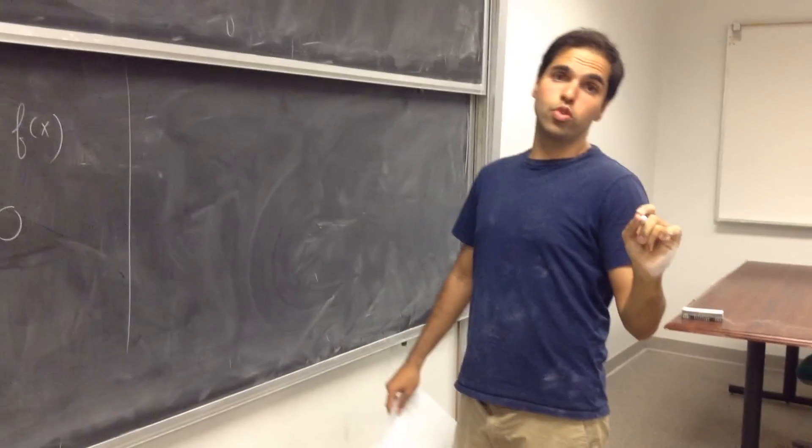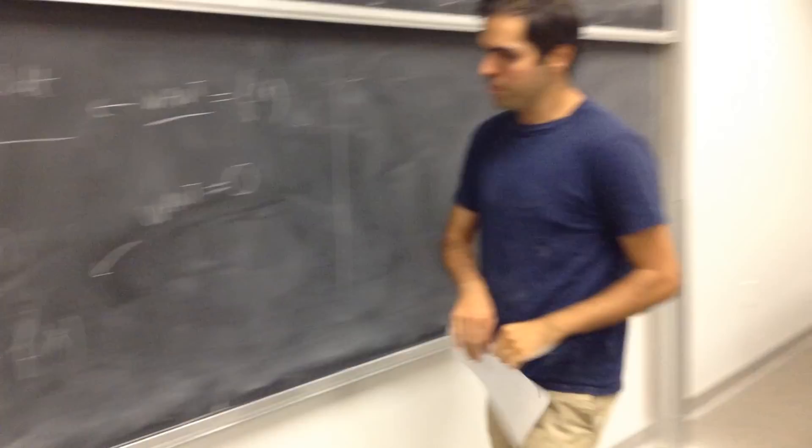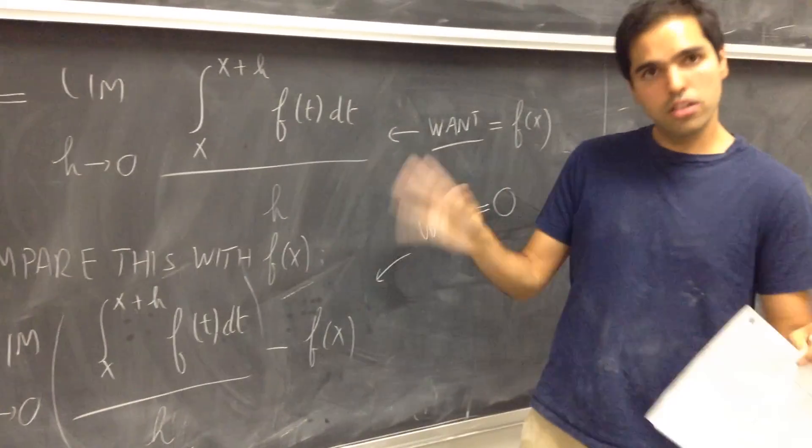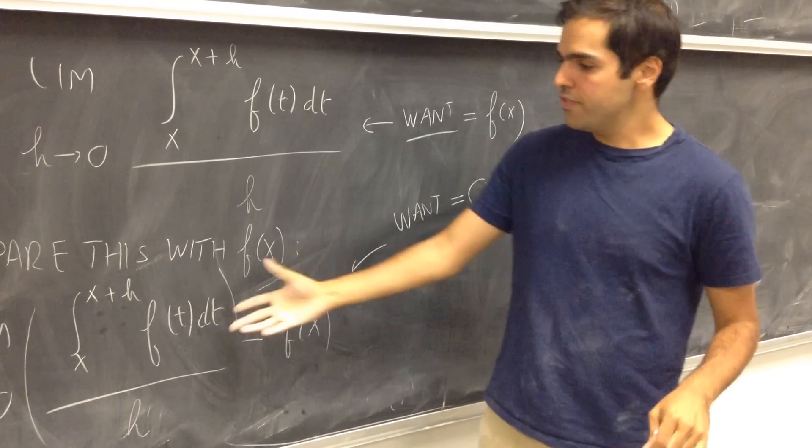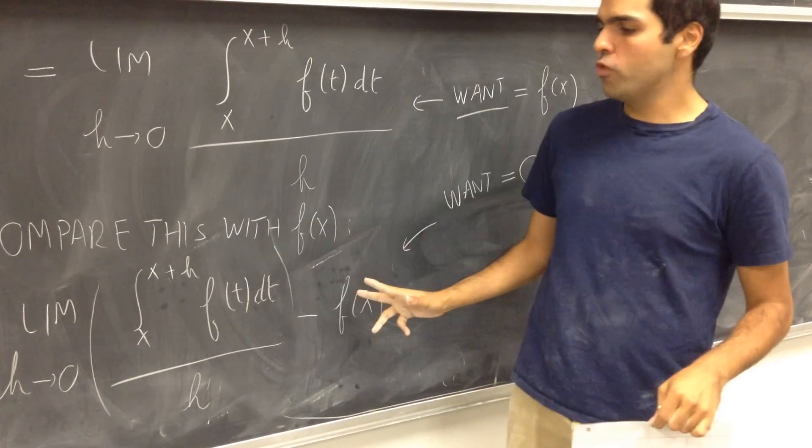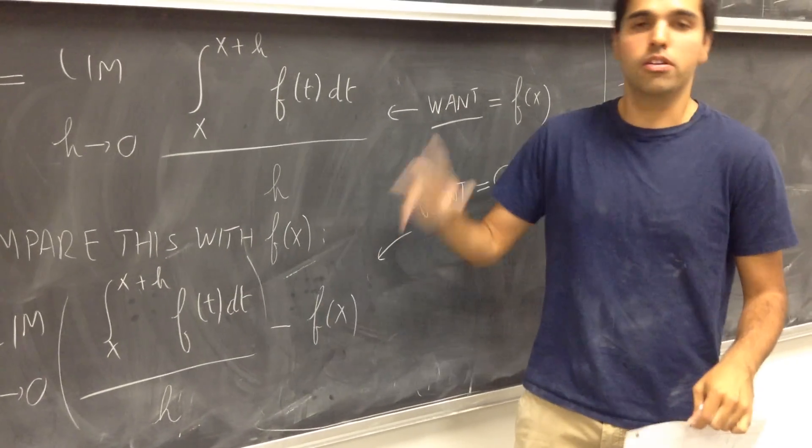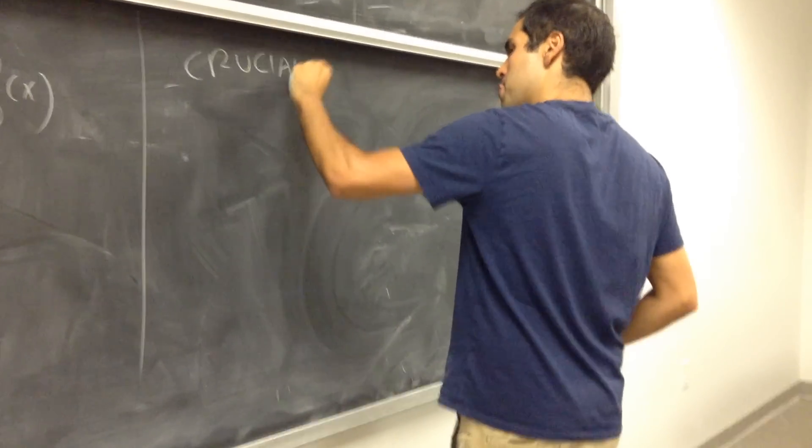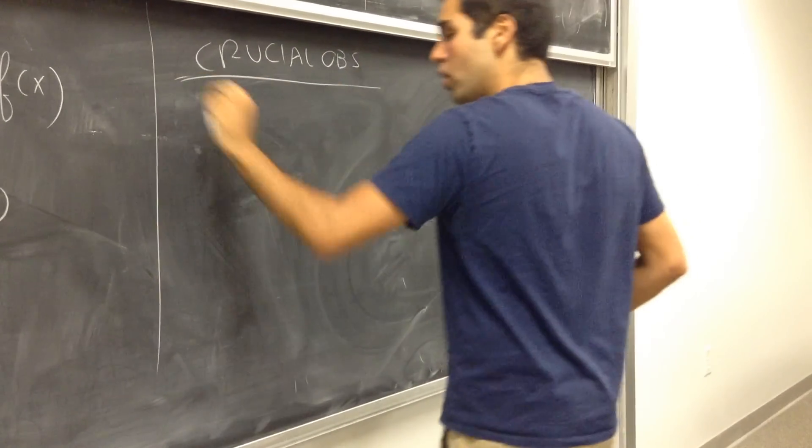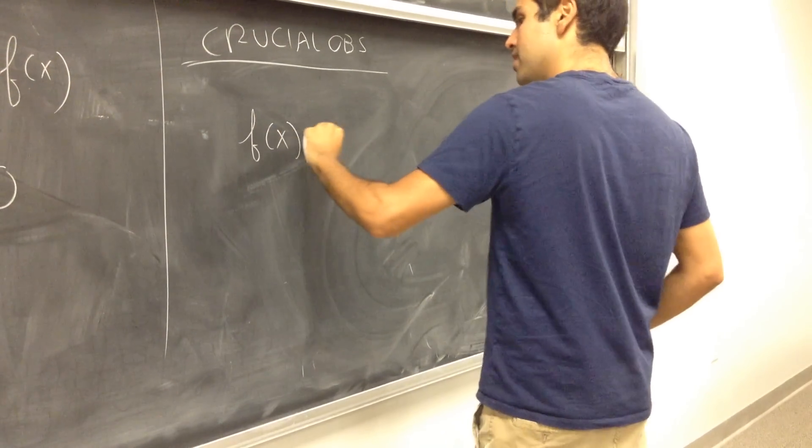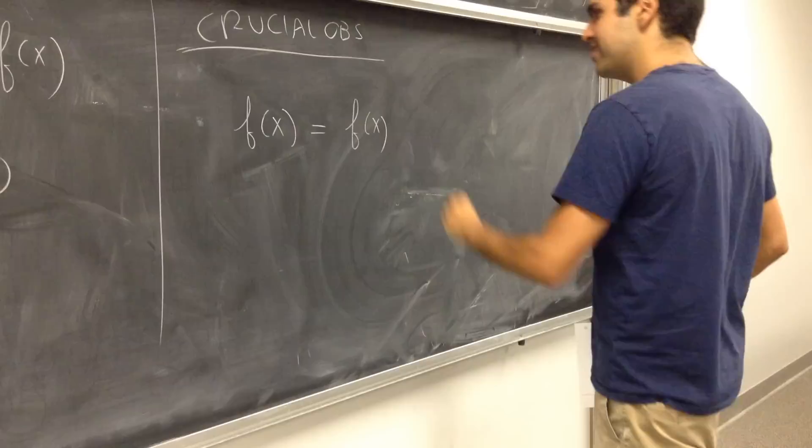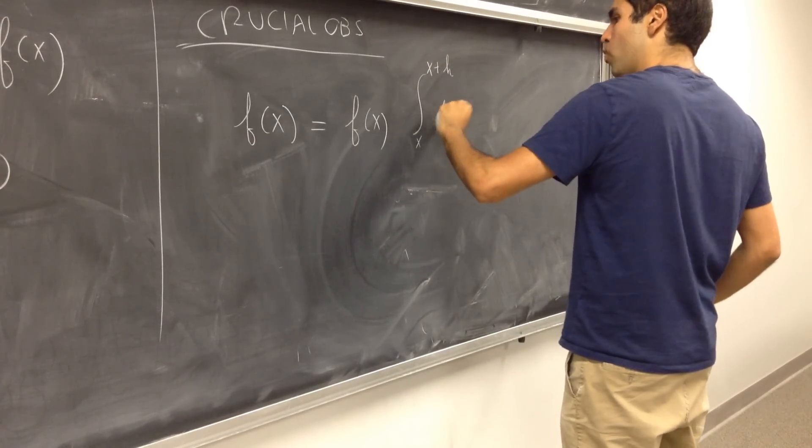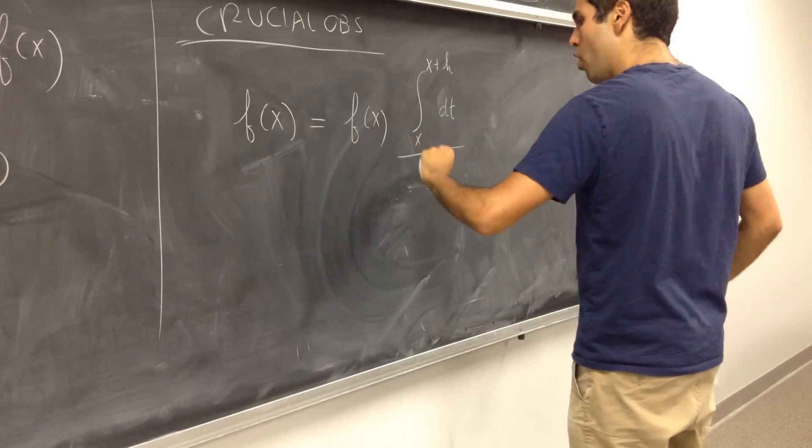So if we want this to be equal to f of x, let's just look at the difference. So maybe step two. Compare this with f of x. In other words, again, let's look at the difference. Here comes the crucial observation which really makes this work. This is an integral, this is a number. Two very different things. You would like to have something that's either an integral minus an integral, or a number minus a number. Something of the same nature.